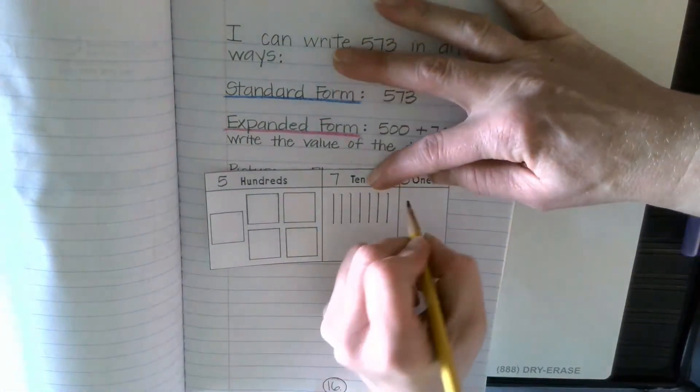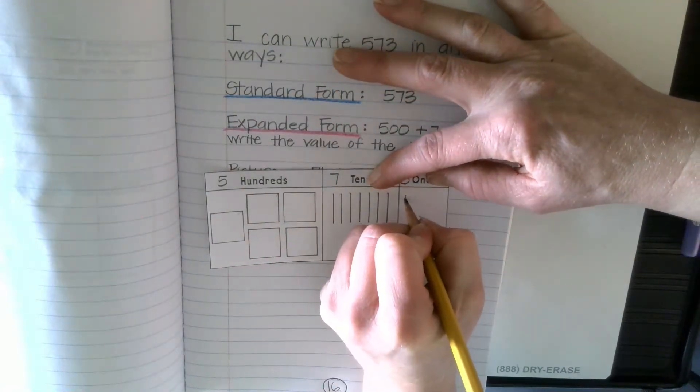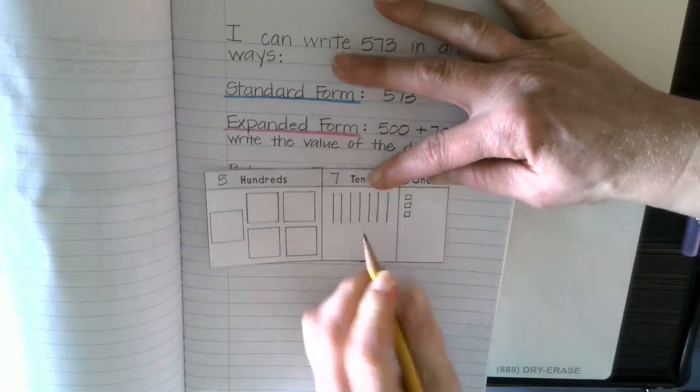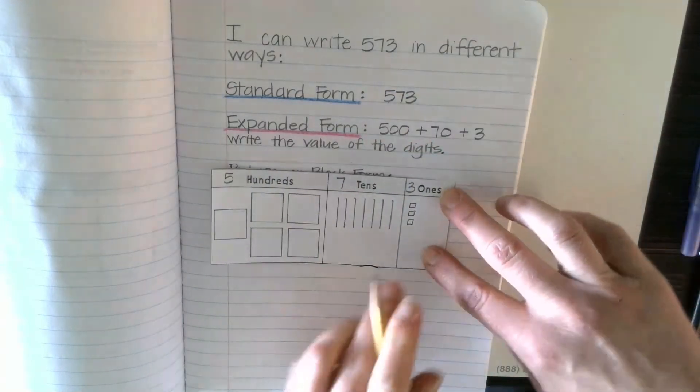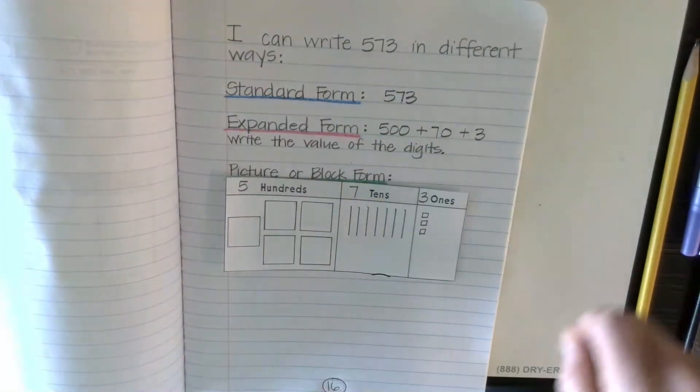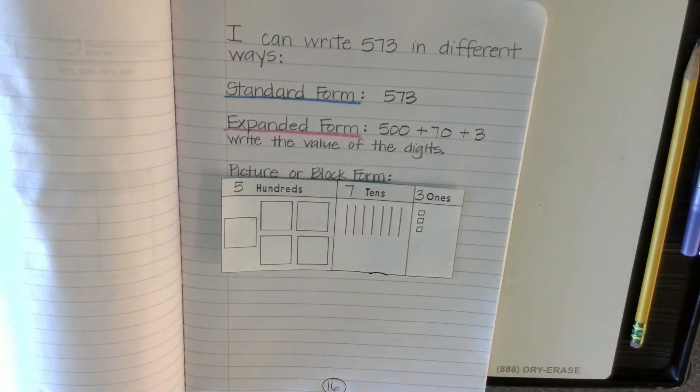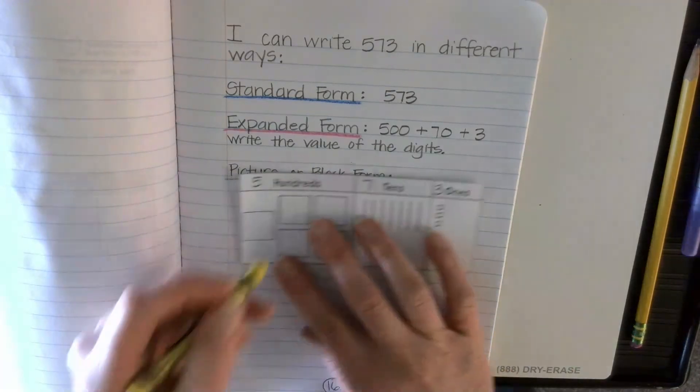And then for my 3 ones, you can just draw little teeny tiny squares for your ones or you can just draw little circles. Now the base ten blocks I have here at school are yellow, so I'm just going to color these yellow.